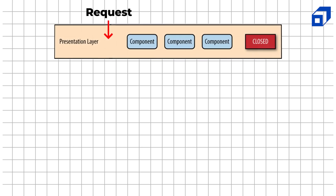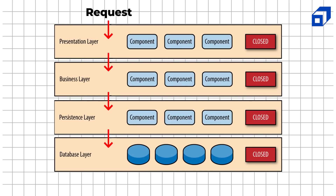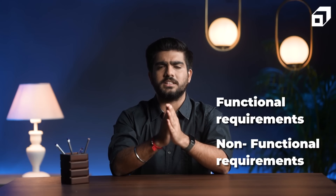Understanding technical feasibility will not always be straightforward in the beginning. You might be required to travel further down the road of designing the product. You may need to break your software architecture down into multiple layers and understand how each of the technical components in these layers interact with each other within and across the layers. Whenever you think about requirements, consider both functional and non-functional requirements.